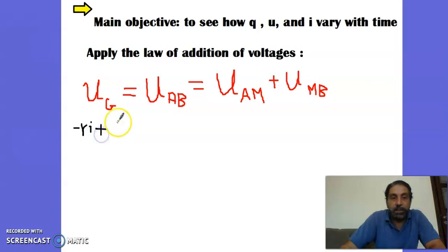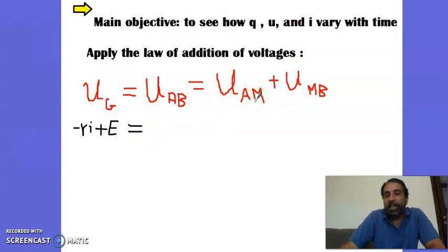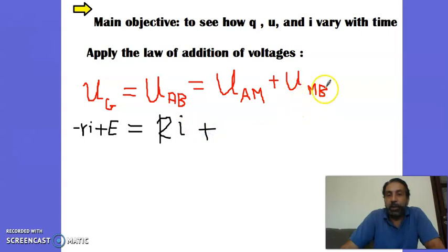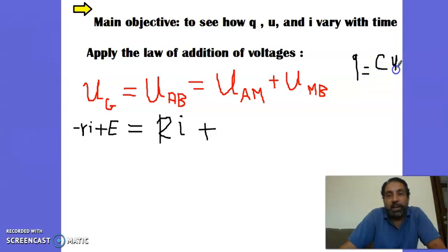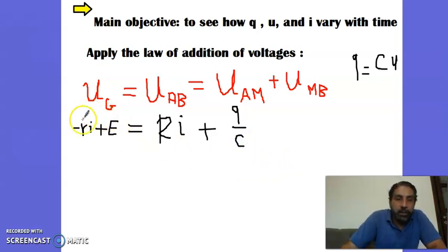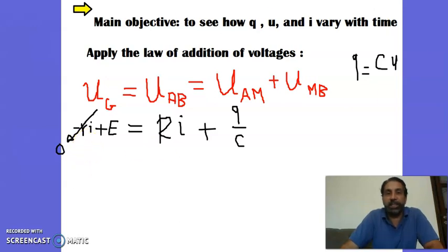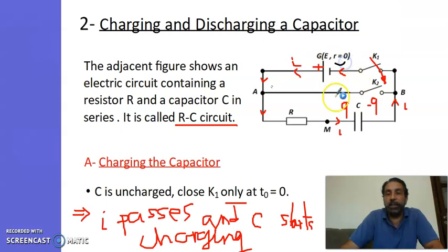U_AM, between A and M there is a resistor, and by Ohm's law that equals R·i. U_MB is the voltage across the capacitor. Remember from video one: u = q/C. Since our generator is ideal, r = 0, so E = R·i + q/C.